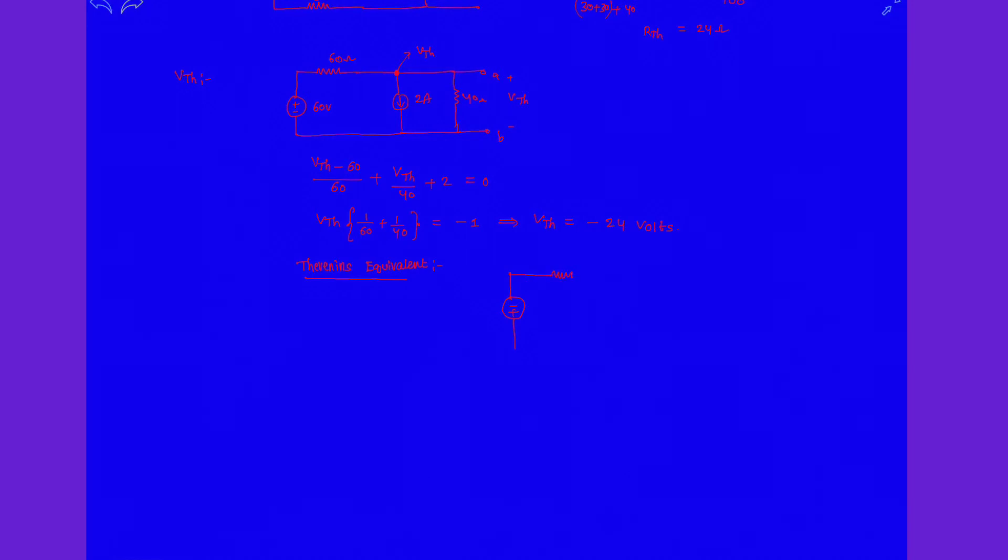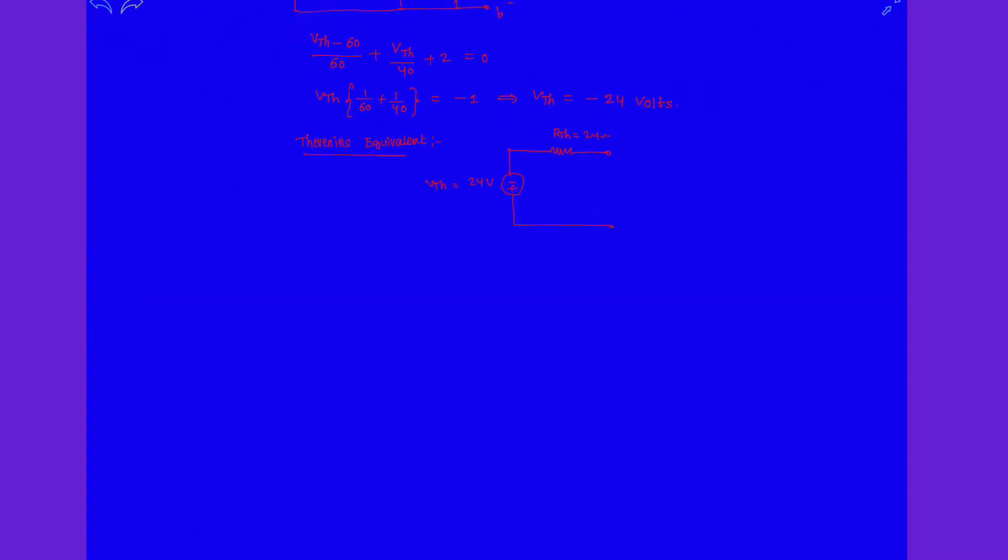That is R_th which is 24 ohms, and V_th is minus 24. That's why I inverted the terminals - the negative terminal is upside and the positive terminal is downside. Now it can be written as 24 volts because the terminals are inverted.